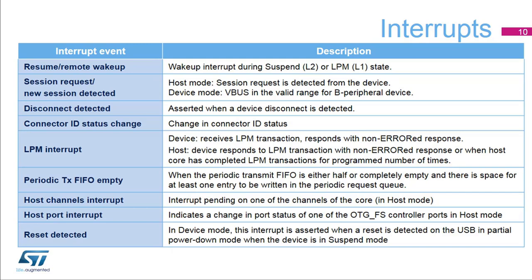Interrupts from this USB block can be triggered by a large number of events or state changes. This slide and the following three slides show all the events that can generate an interrupt. As can be seen, these interrupt sources are diverse, ranging from events related to low power management and OTG, to events related to normal host behavior and regular USB reset and disconnect events.